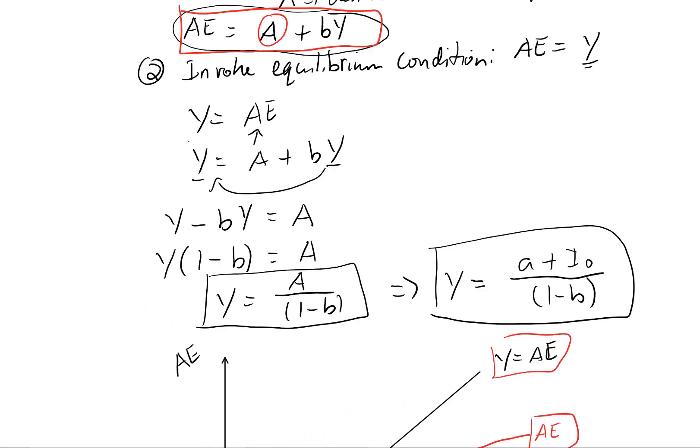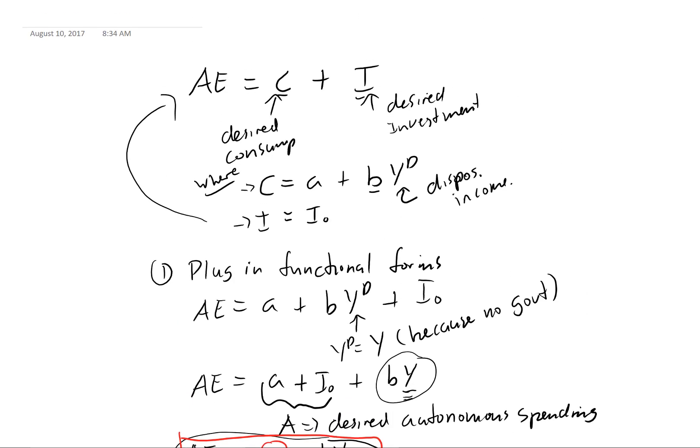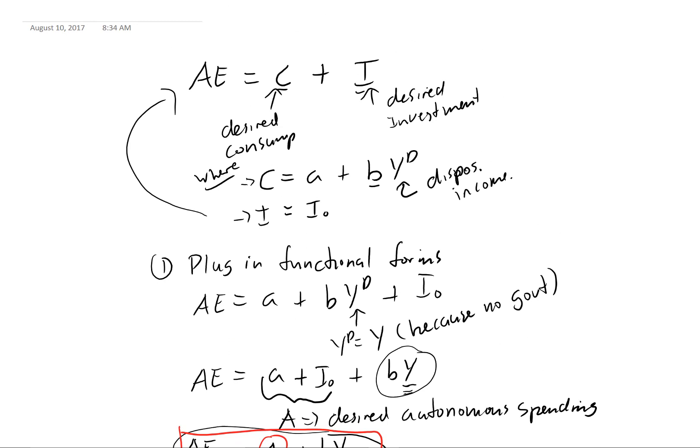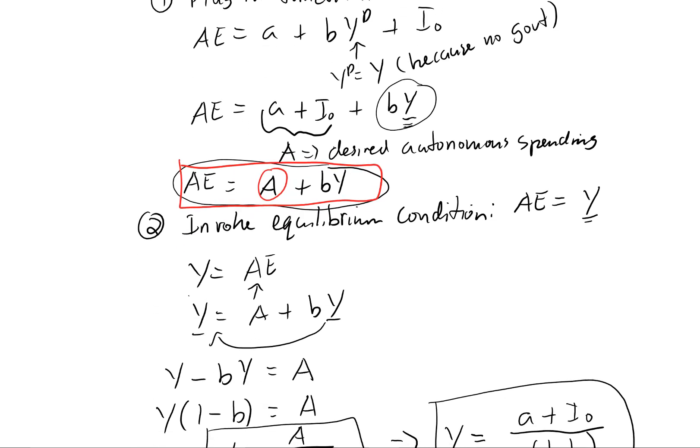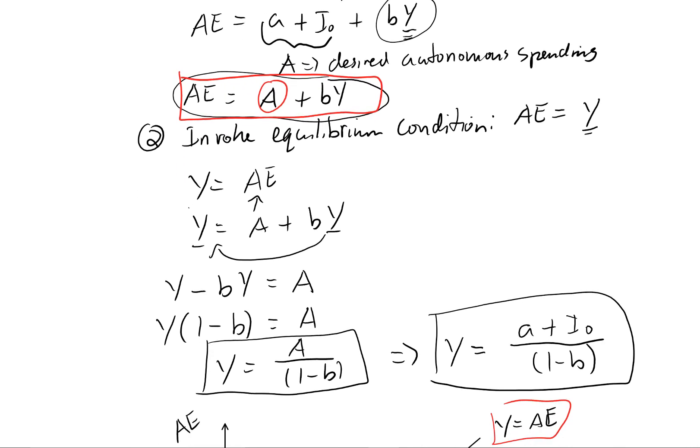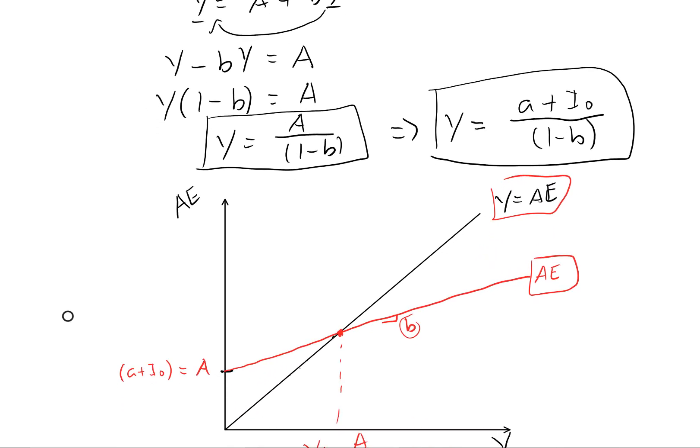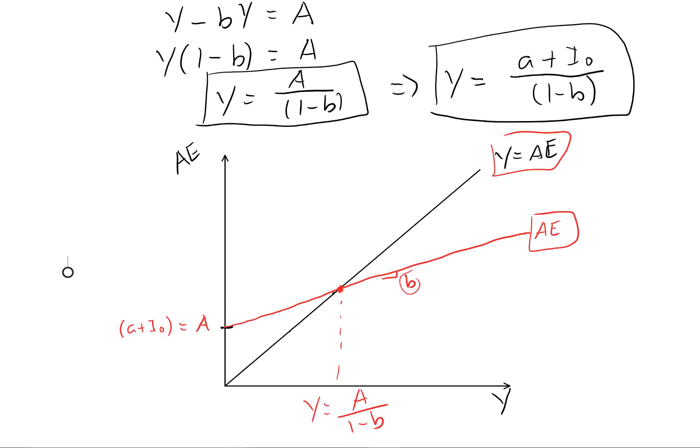Okay, so I mean, the steps we just got to remember are just writing out what's ever in our aggregate expenditure function, plugging in whatever our functional forms are, invoking our equilibrium condition. And then just solving for Y and graphing out our functions.